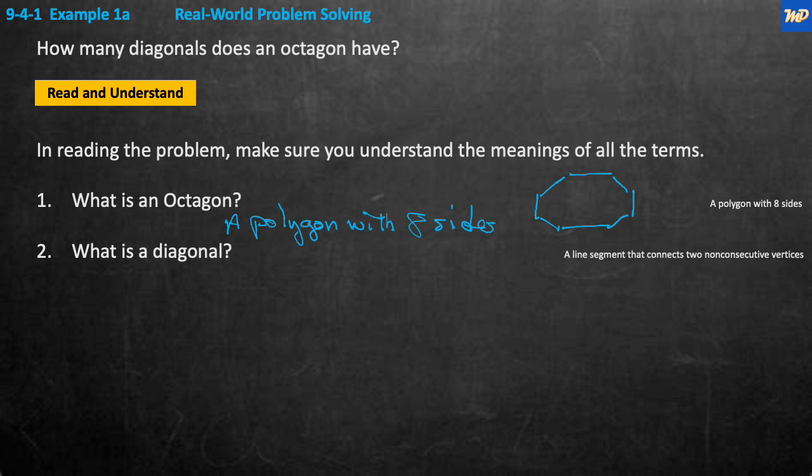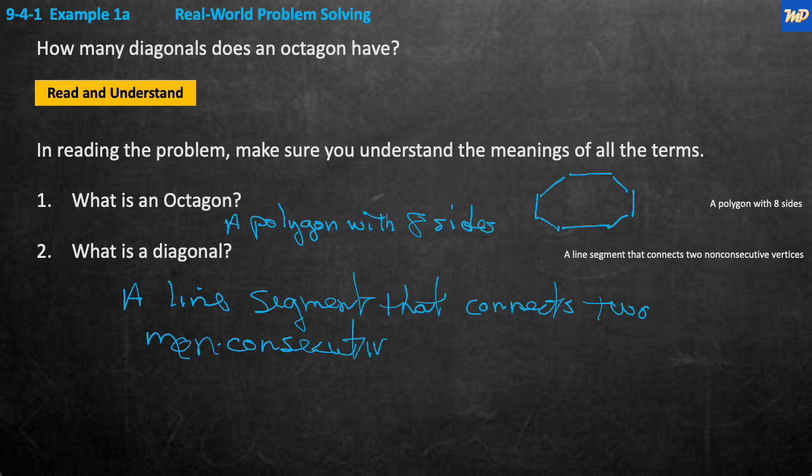Then it says what is a diagonal? A diagonal is a line segment that connects to non-consecutive vertices. And what's a vertex or vertices? The vertex, going back up here to the hexagon that I drew, each one of these points right here, this one, this one, this one, these are considered the vertices. It's like the vertex, there are little angles here. This is the vertex of the angle. Each one of these form an angle. The more sides there are, the smoother this circle gets.